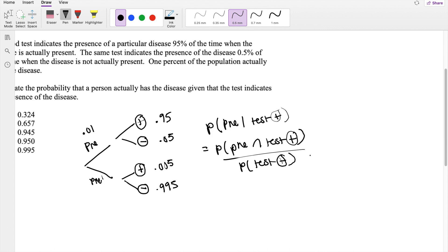So the probability of testing positive and present is going to be these two numbers here, 0.01 times 0.95. And the probability that you test positive is going to be these two branches of the tree. So this one test positive and this one, right?